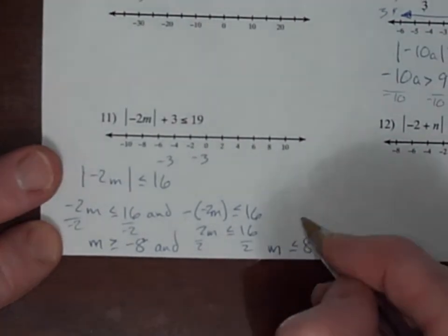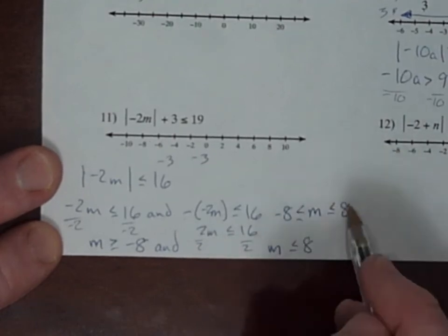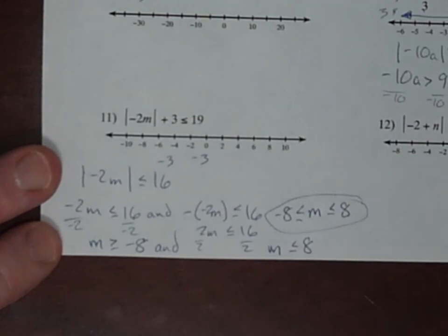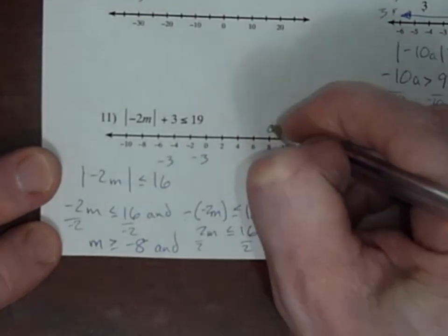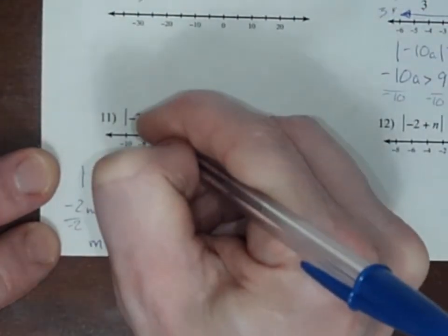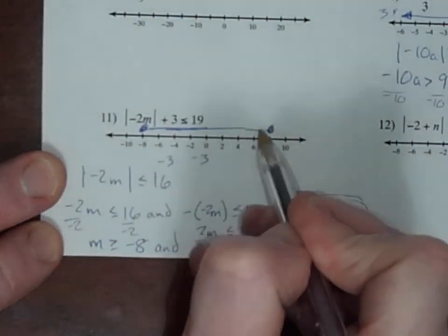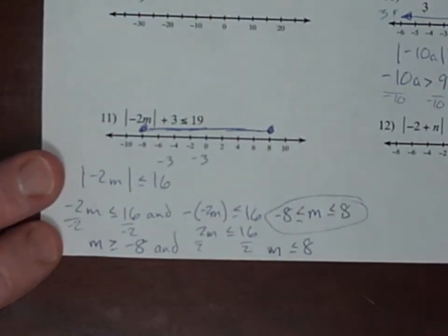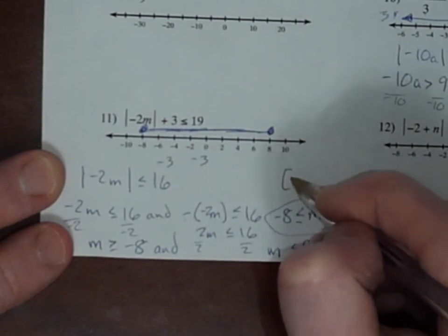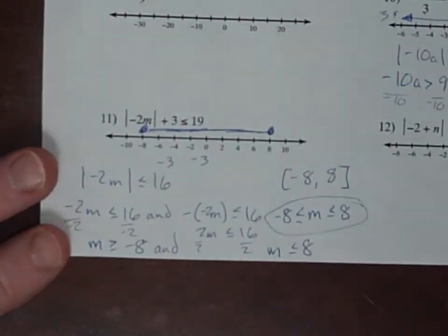And again, sometimes you'll see it written with n in the middle: less than or equal to 8 and greater than or equal to negative 8. So it's between 8 and negative 8 with filled-in circles. There's 8, there's negative 8, fill them in. The interval notation of that becomes inclusive of negative 8 and positive 8. And you're set.